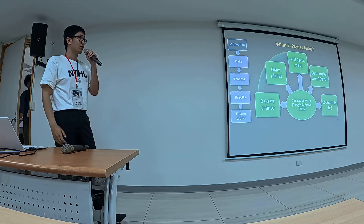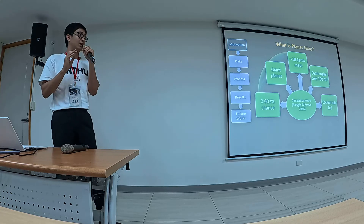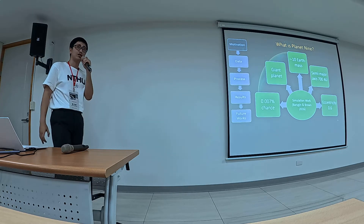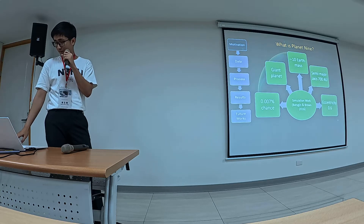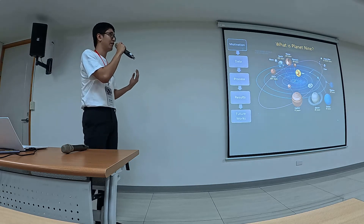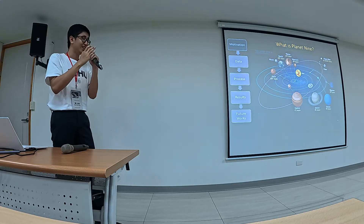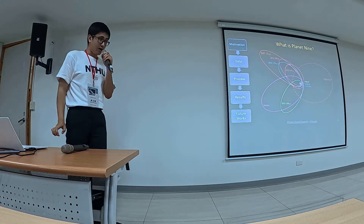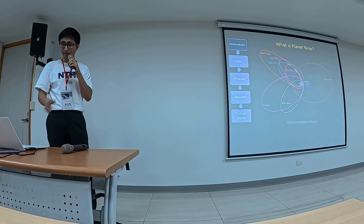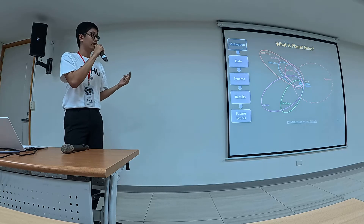Simulation results suggest this giant planet, called Planet 9, can maintain the orbital clustering of trans-Neptunian objects. It is predicted to be about 10 times more massive than Earth with a semi-major axis of 700 AU, an orbital period of 10,000 to 20,000 years, and a perihelion roughly 180 degrees away from the perihelion of the clustered objects. However, to date there is no observational evidence confirming the existence of Planet 9.